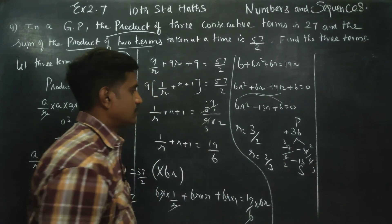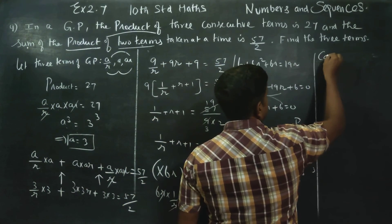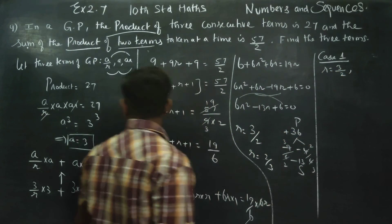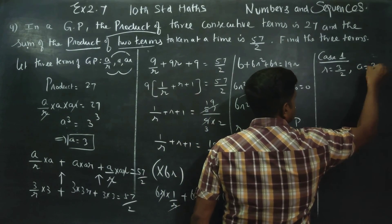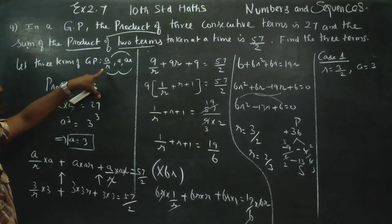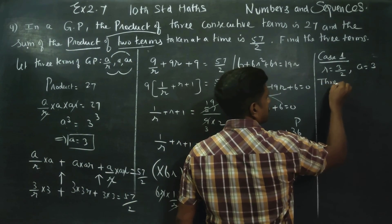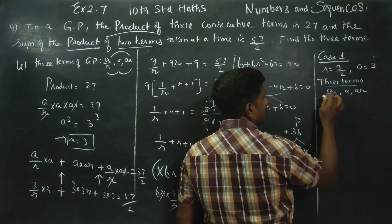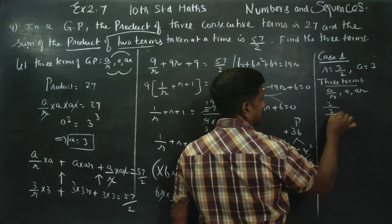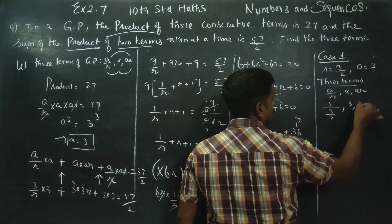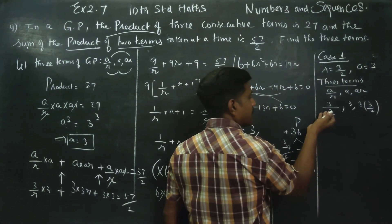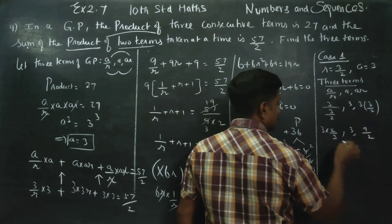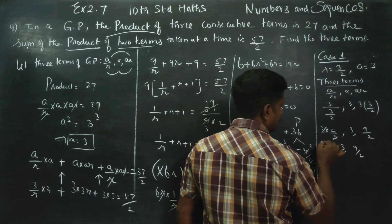Case 1: R is equal to 3 by 2, and A is equal to 3. The three terms using the formula A by R, A, AR are: 3 divided by 3 by 2 equals 2, then A equals 3, then 3 into 3 by 2 equals 9 by 2. So the three terms are 2, 3, 9 by 2.